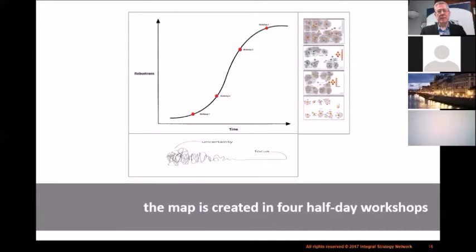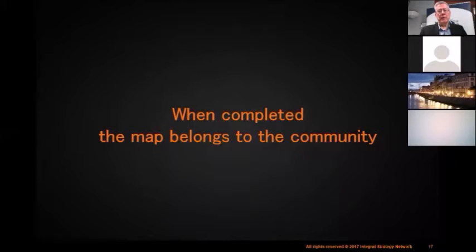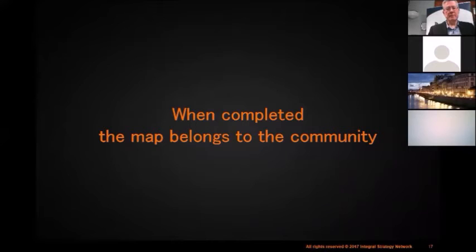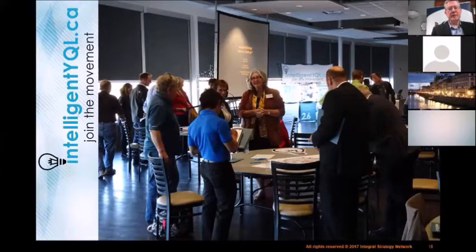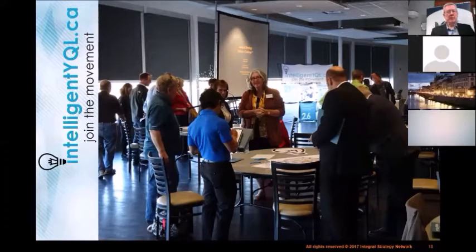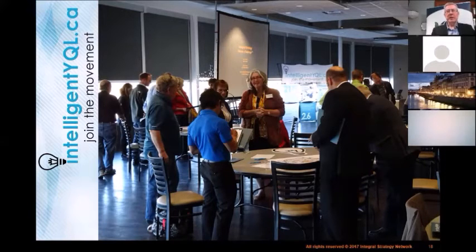We see this clarity achieved in every one of these projects. When completed, the map belongs to the community. Our role in this process is to create the space for a meaningful, authentic dialogue among stakeholders. Often at the end of the day, this is presented to a larger group — this was an open house held in Lethbridge, Alberta, where the community was invited in to see what had been created and how each stakeholder could then contribute to achieving this vision. In this case, this was the vision for an intelligent community — leveraging the power of connectivity and the internet to create opportunity and quality of life.